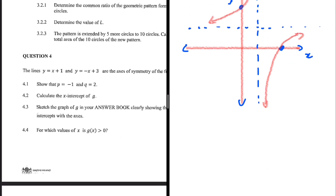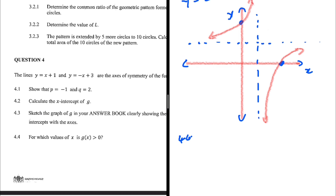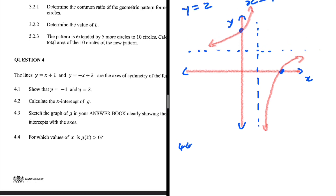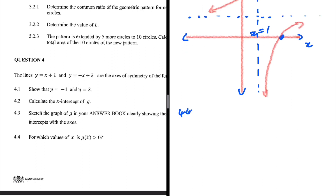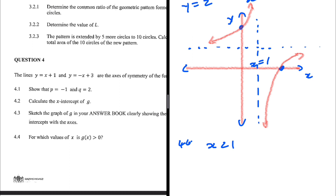For question 4.4, we find values of x where g of x is greater than 0. From the sketch, when x is less than 1, g of x is greater than 0. When x is between 1 and 3, g of x is less than or equal to 0. But when x is greater than 3, g of x is again greater than 0. So g of x is greater than 0 for x less than 1 or x greater than 3.